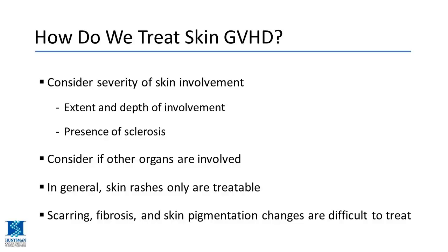We also look for other organ involvement — eyes, mouth, GI tract, liver numbers. If only the superficial epidermal portion is involved, it's generally very treatable. But if we're dealing with multi-organ involvement of three or more organs, or the sclerotic form, we have to start using more aggressive systemic treatments.